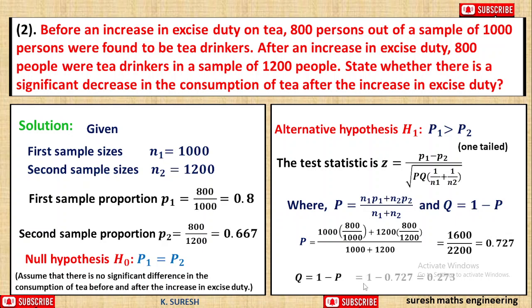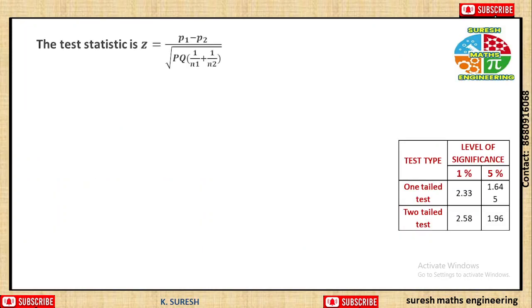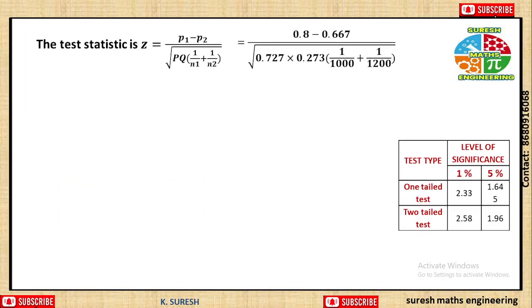Q equals 1 minus P, so Q equals 1 minus 0.727, which gives Q equal to 0.273. Now we apply these values in the test statistic formula.